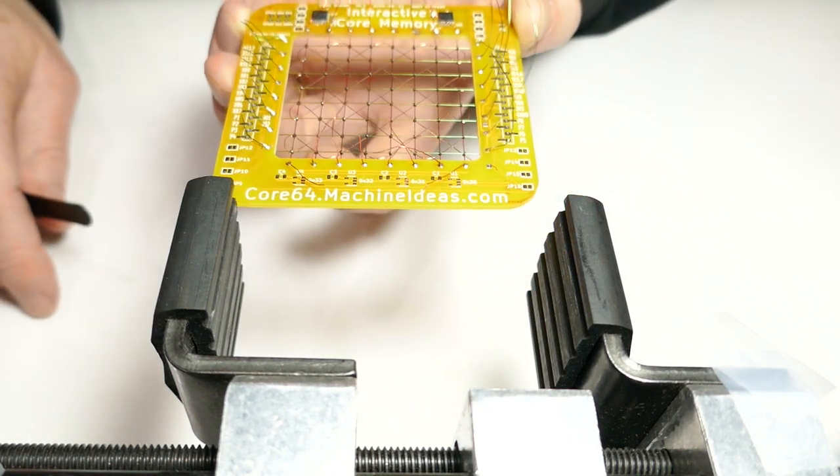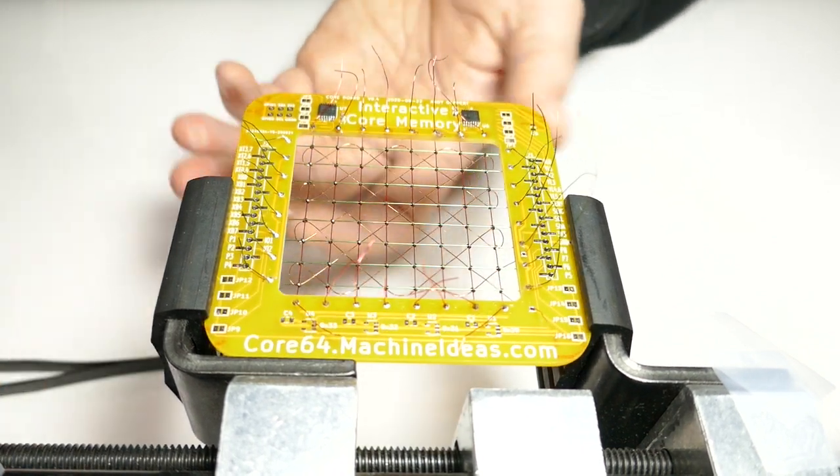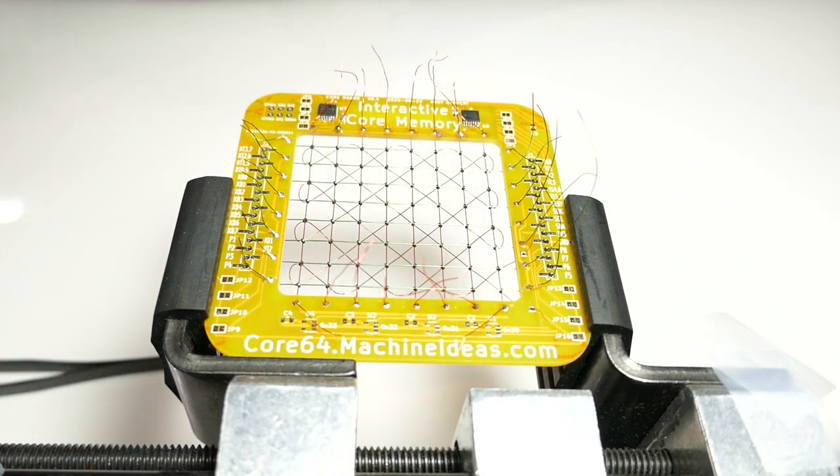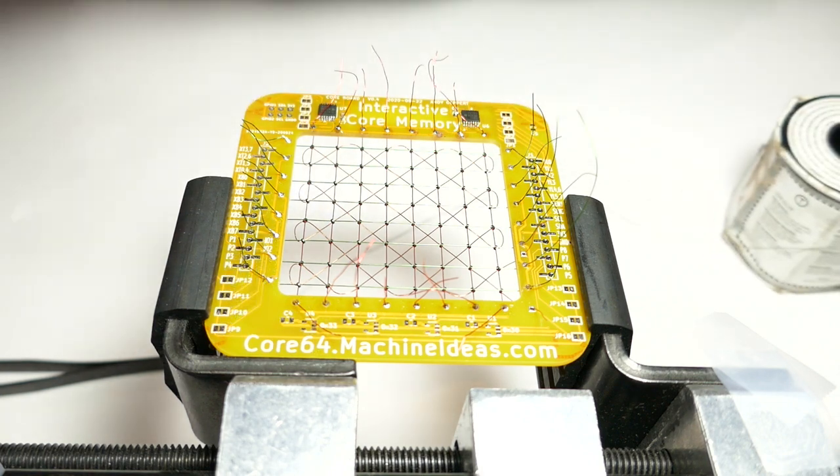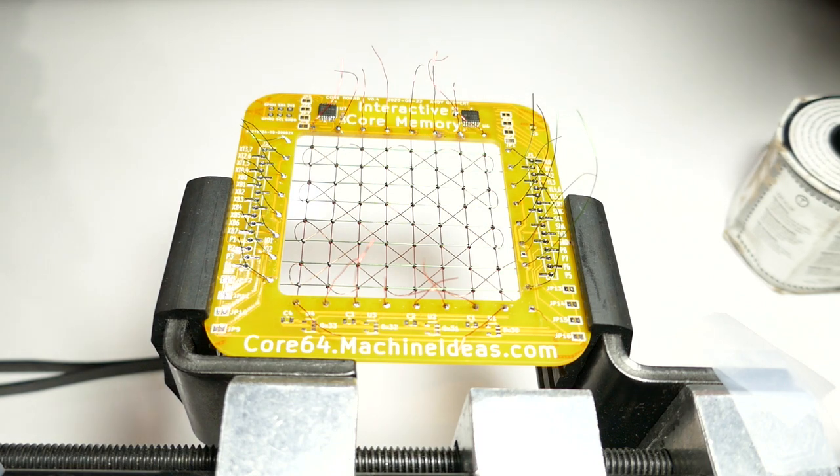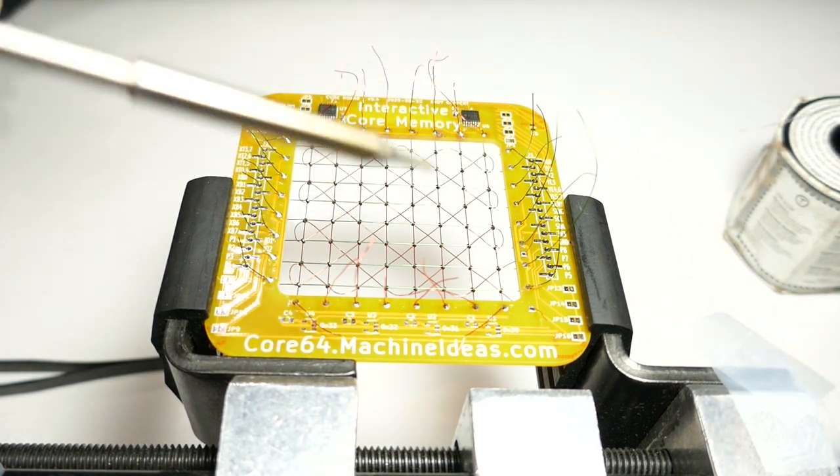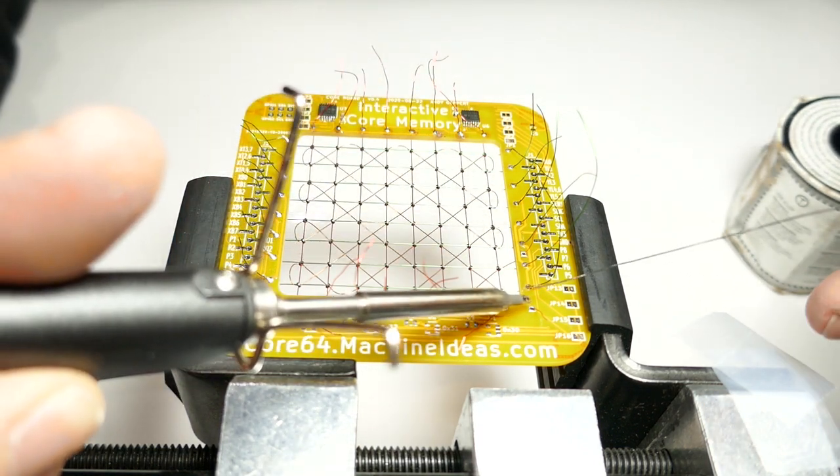Flip this over and do the trick where I solder a little bit first, and then I'll come back and tension it. Here's the initial entry of the sense wire, solder there and the exit.